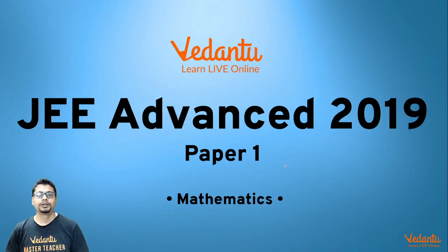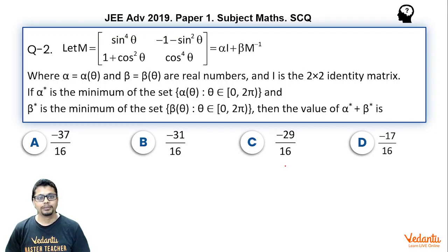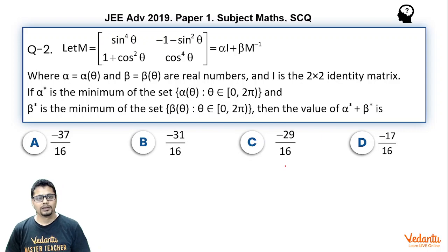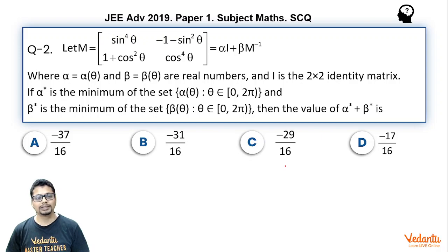Hi everyone, I'm Shibam Jhabar, a master teacher at Vedantu. We are discussing JEE Advanced 2019 Paper 1 Mathematics. The question for this video: let M be a matrix having four elements equal to alpha times I plus beta times M inverse, where alpha is some function of theta and beta is again a function of theta, both real numbers, and I is the 2×2 identity matrix. If alpha* is the minimum of the set alpha(θ) and beta* is the minimum of beta(θ), both as theta varies from 0 to 2π, find the value of alpha* plus beta*. It is a single correct type question.